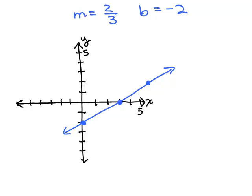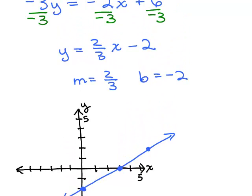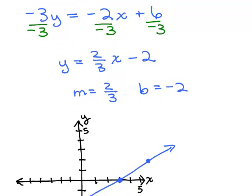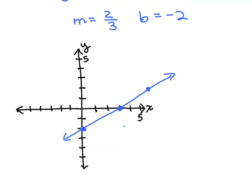Now the last thing I want to do is a little checkpoint. We have to remember what the original problem was, so let's slide back up here. What was it? 2x minus 3y equals 6.